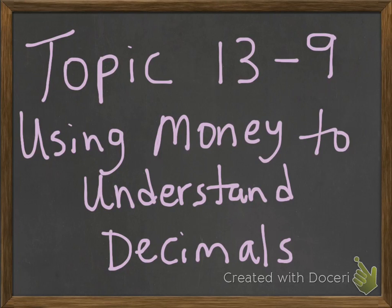Topic 13, Lesson 9: Using Money to Understand Decimals. So far you know how to identify place value for whole numbers. In this lesson, you're going to use money to identify place value for parts of a whole.